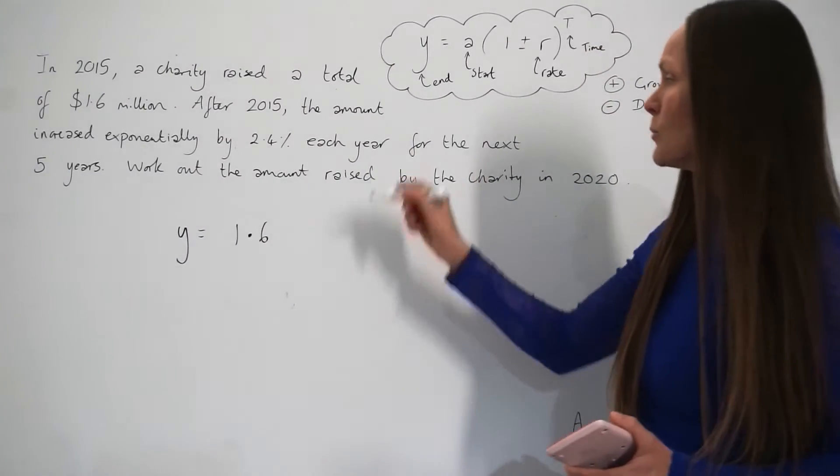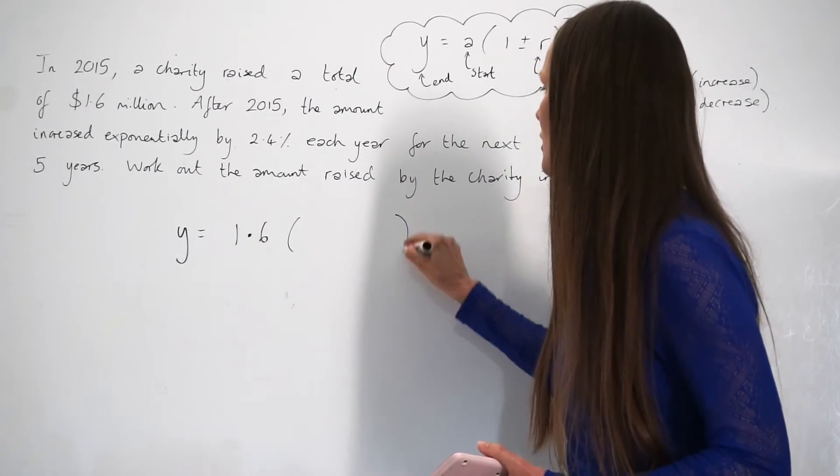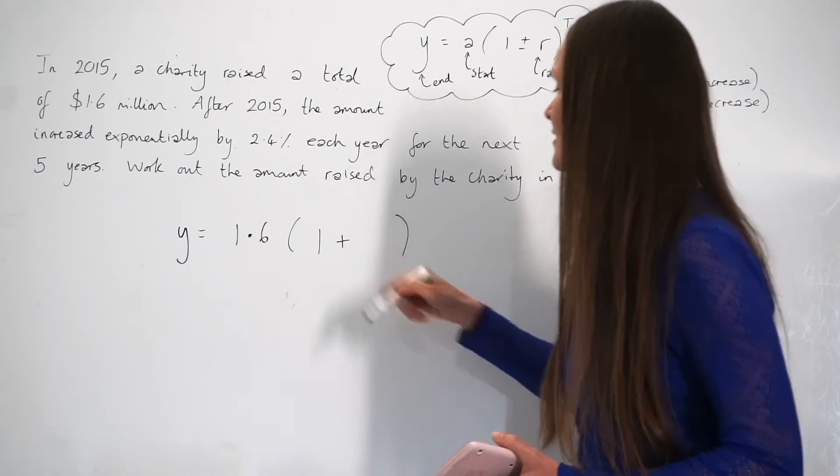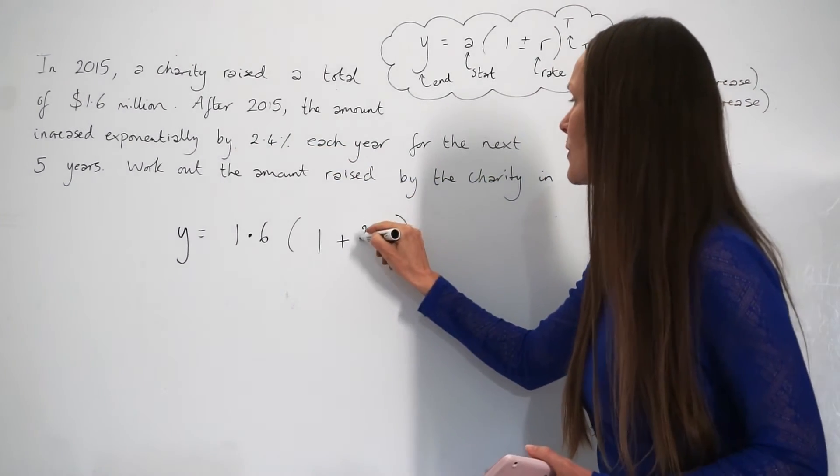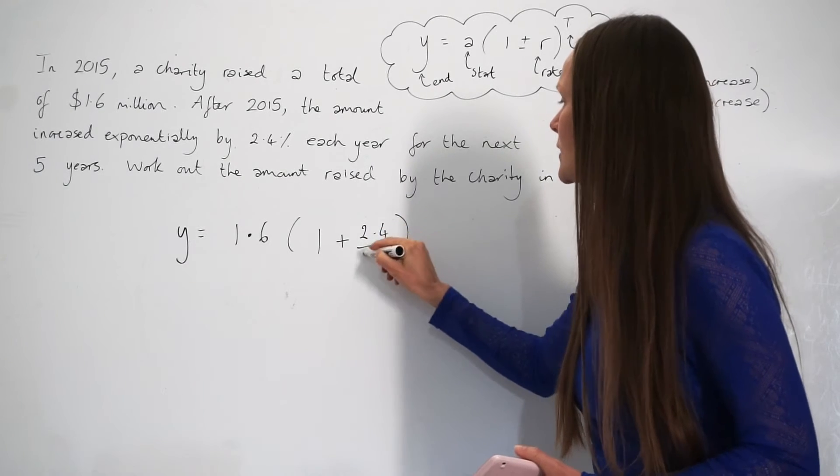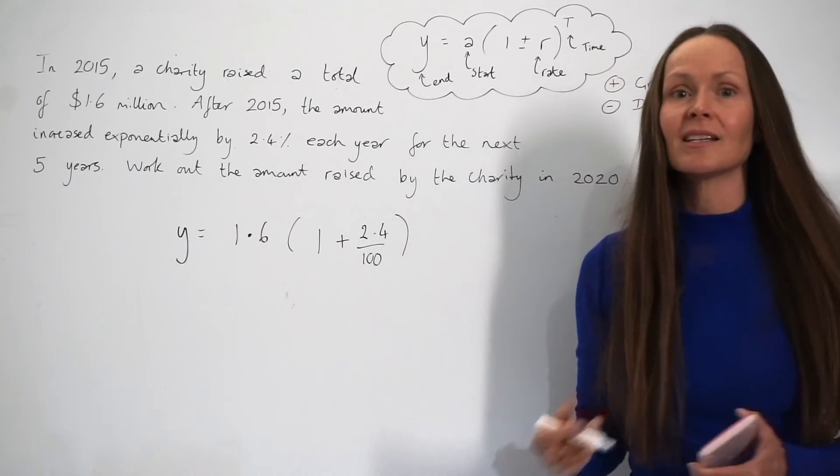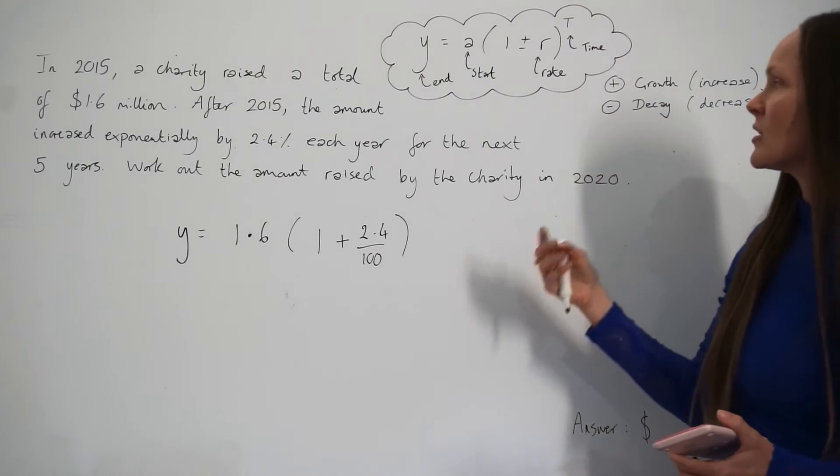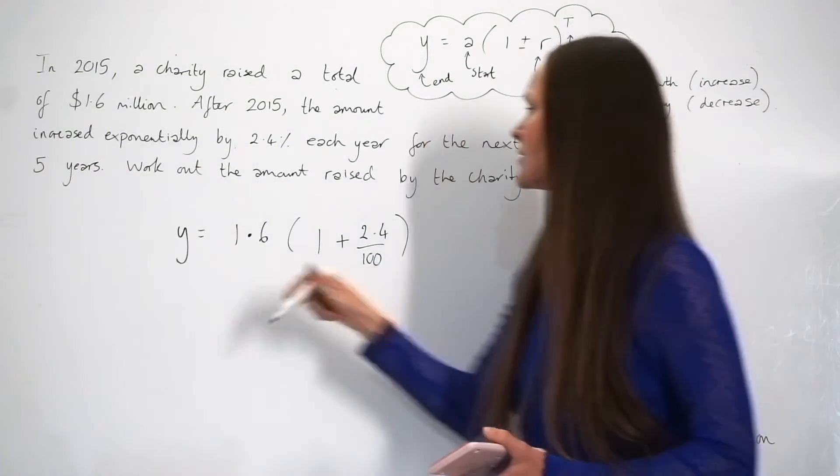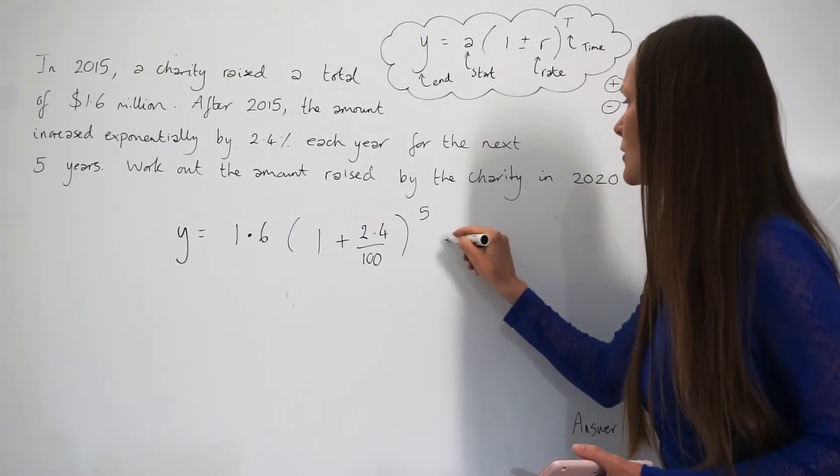So then you have to multiply the start amount by 1 plus the percentage rate. So the percentage rate is 2.4%, so that's the same thing as 2.4 out of 100. Not forgetting to raise it to the power of T. So the time in this question is five years, so raised to the power of five.